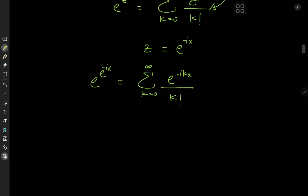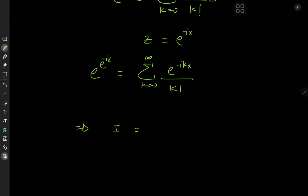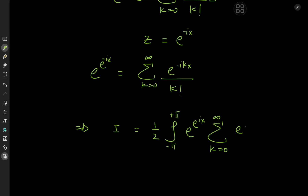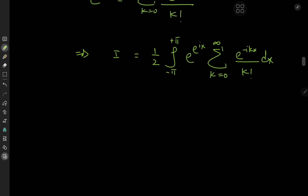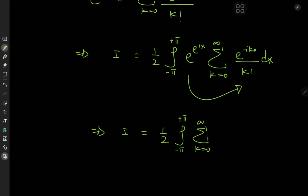Using the series expansion on the target integral, we have I equal to one half the integral from negative pi to positive pi of e to the e to the ix times the sum over k of e to the negative ikx divided by k factorial dx. The exponential function outside is independent of the index variable k, so we can slip it inside the summation operator, giving us one half the integral from negative pi to positive pi of the sum over k of e to the e to the ix times e to the negative ikx divided by k factorial dx.